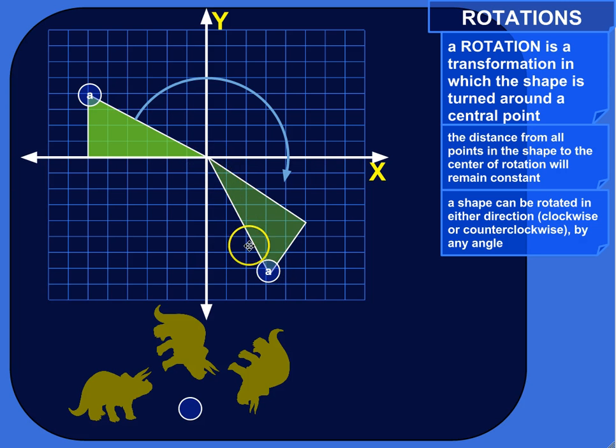It'll still be a distance of 7 from that central point. It'll just be in a different location with respect to that point. But it'll be the same distance. And that's what creates this nice circle when you rotate an object.